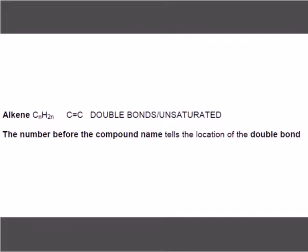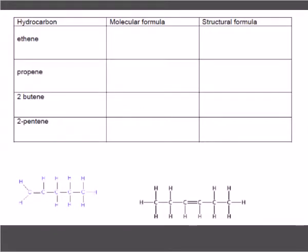What's the family we're going to talk about? Alkenes are very similar, but now they have a double bond. The ending, that suffix '-en', means that you have a double bond somewhere in that structure. When you have a double or triple bond, that means it's unsaturated. Saturated means full. Alkanes are the only ones that are saturated because every single bond is full. They can't add anything else in there. But alkenes are unsaturated. The number before the compound name tells the location of the double bond.